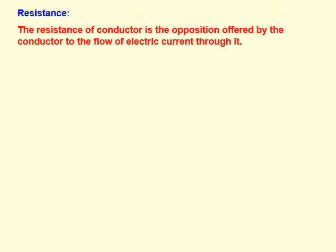What is resistance of a conductor? The resistance of a conductor is the opposition offered by the conductor to the flow of electric current through it. So any opposition offered by the conductor to the electric current flow is called resistance of that conductor. The formula is R = V/I.